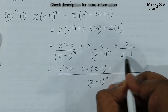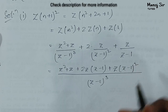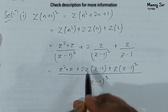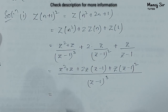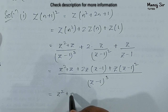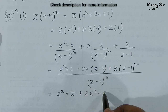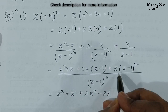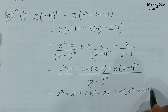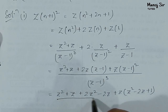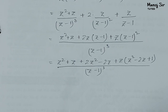Now opening and expanding the brackets: z²+z, plus 2z²−2z from expanding 2z(z−1), plus z(z−1)² which expands as z(z²−2z+1), all over (z−1)³.